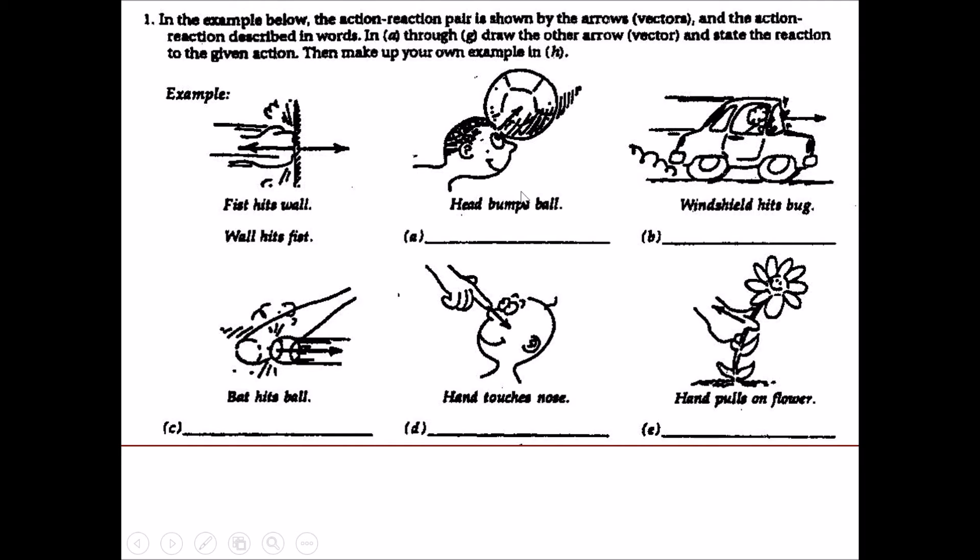For the first one, head bumps ball, and therefore the opposite reaction would be ball bumps head. So you're supposed to draw the arrow downwards like this pointing down. Remember the length of the arrow symbolizes how much force there is, so you should mimic the length of the original arrow in your opposite arrow.